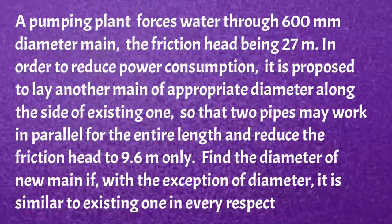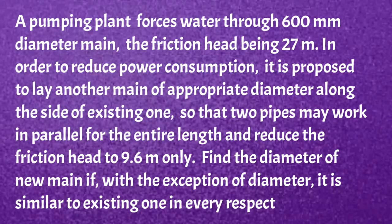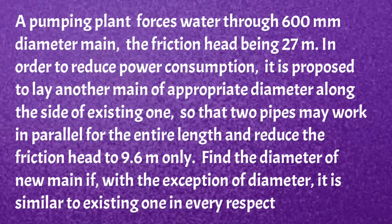A pumping plant forces water through a 600 mm diameter main, the friction head being 26 m. In order to reduce the power consumption, it is proposed to lay another main of appropriate diameter alongside the existing one, so that the two pipes may work in parallel for the entire length and reduce the friction head to 9.6 m only. Find the diameter of the new main if, with the exception of diameter, it is similar to the existing one in every respect.